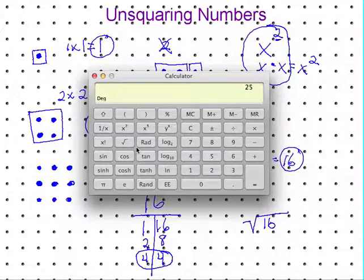So that's how you unsquare numbers. You just find the square root of whatever number it is that you're looking for.